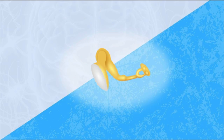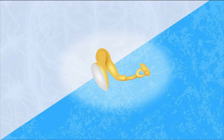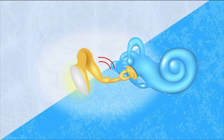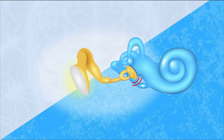These three bony ossicles are connected to each other in a very interesting way. Since they're tiny bones, they're connected via tiny joints, and when one moves it causes movement in the others. So when the tympanic membrane starts to vibrate, that causes the malleus to move back and forth, which causes the incus to move back and forth, which causes the stapes to move back and forth. All of this essentially takes the vibration from the tympanic membrane and causes the oval window to vibrate. It's a beautiful thing.